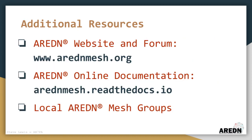Probably the best single place to go for additional information is the AREDN website at www.arednmesh.org. There you will find information about the types of radios that are supported, as well as all of the AREDN software available for download. There's also a wealth of information on choosing devices and planning AREDN networks for MCOM.